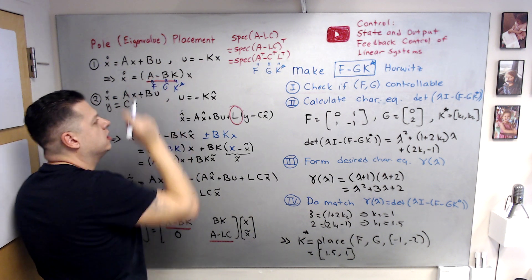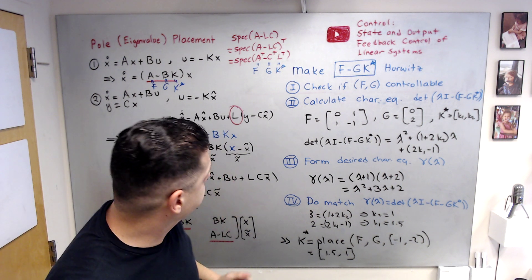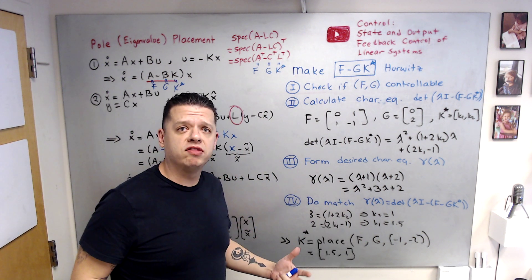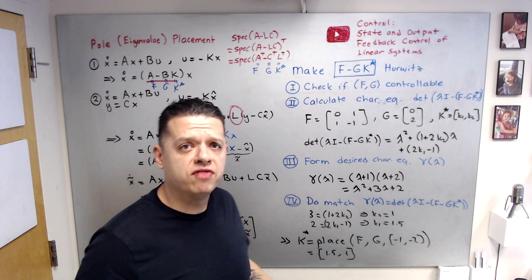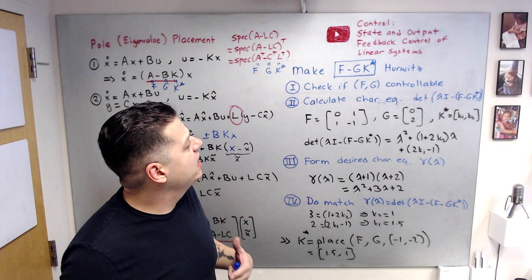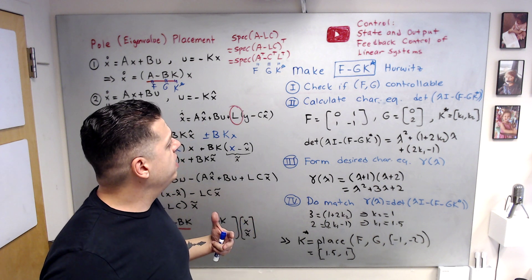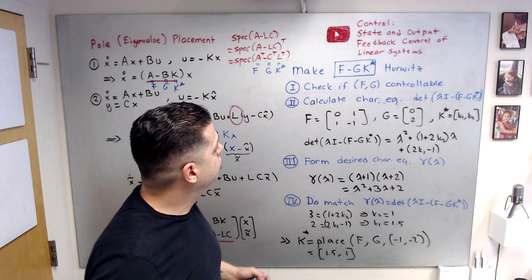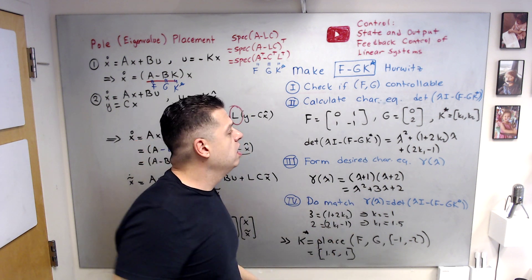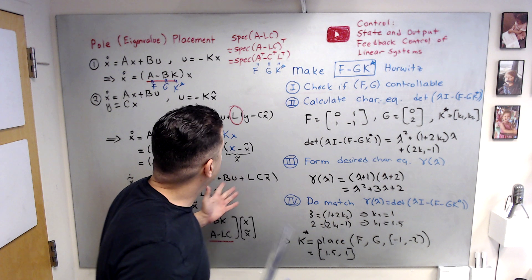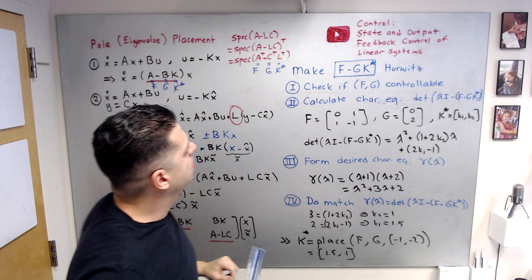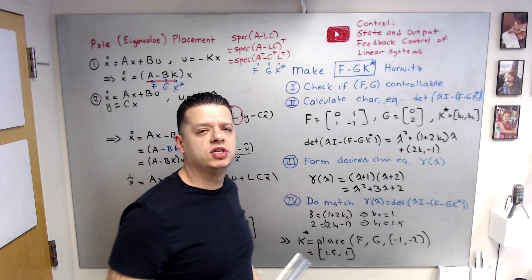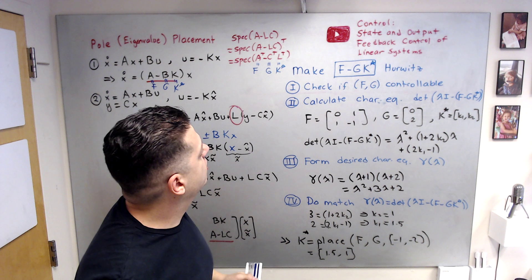I also want to mention a video on my channel where I discuss different command-following and stabilization control architectures for both state feedback and output feedback. In that video, the design step is to make some matrix F - GK* Hurwitz. You can watch that video and use pole placement to do command following as well. For now, I will focus on stabilization, but the same technique applies to the command-following problem.